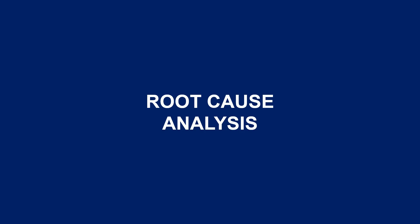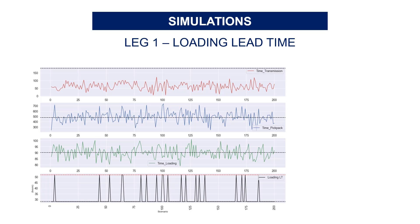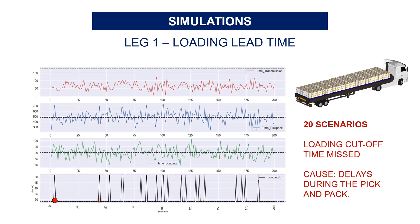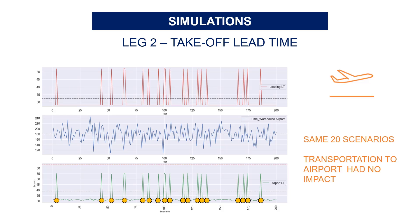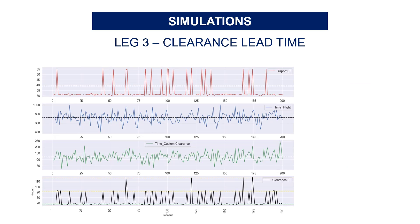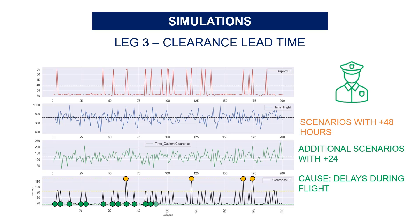Now let's conduct the root cause analysis. We are lucky that only two out of five cutoff times were missed. Let's deep dive into each leg. For shipping, 20 scenarios missed the loading cutoff at 7 PM, mainly because of delays during pick and pack. The truck then heads to the airport — and we see the same 20 scenarios with 24-hour delays. Importantly, the transportation from warehouse to airport did not cause any additional late arrivals. After landing, you need to be on time for customs clearance: we have scenarios with plus 48 hours and additional scenarios with 24-hour delays, due to the impact of flight time causing several shipments to arrive after the customs clearance cutoff time.